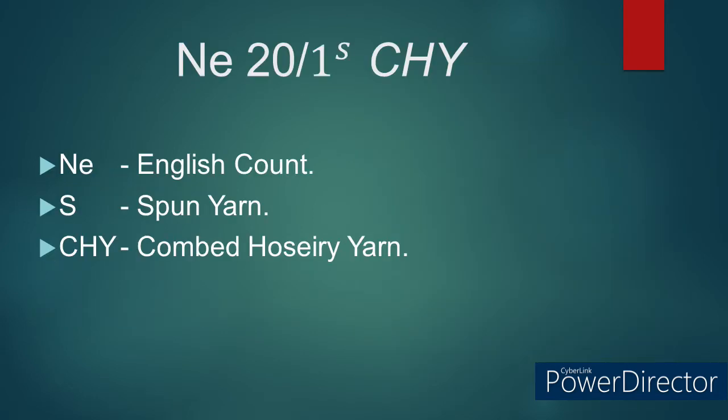Number 1: NE 20/1S CHY. Here NE actually stands for Number English, but commonly called as English count — it is the number of times the length of one pound of yarn can be divided by 840 yards. That is, NE 20/1S yarn would have 16,800 yards in one pound of yarn.